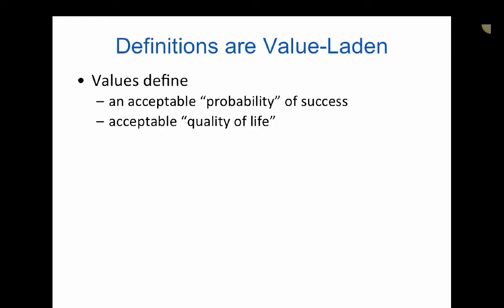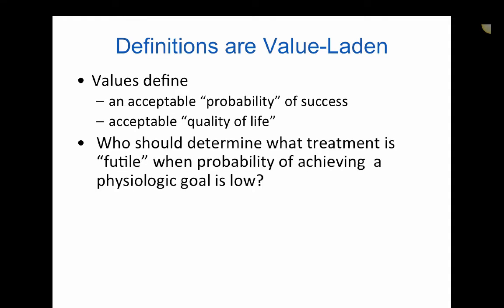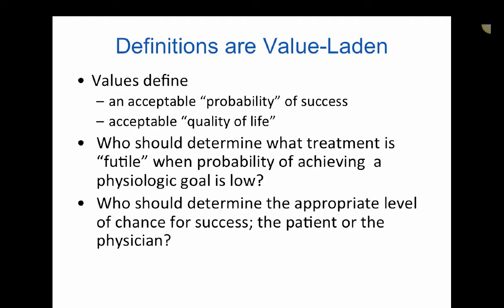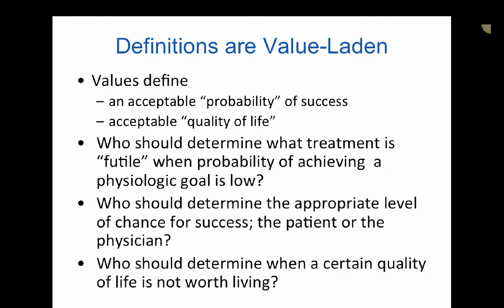Essentially, definitions are value-laden. Values define what is an acceptable probability of success, and values also define what is meant by an acceptable quality of life. Who should determine what treatment is futile when the probability of achieving a physiologic goal is low? Who should determine the appropriate level of chance for success — the patient or the physician? And who should determine when a certain quality of life is not worth living?